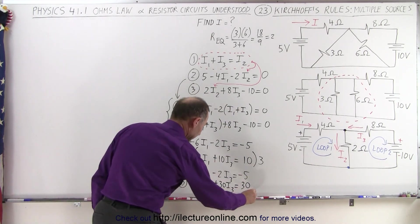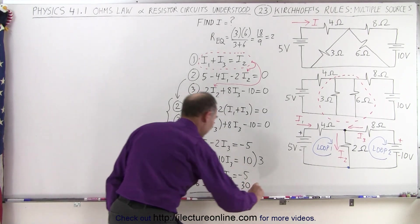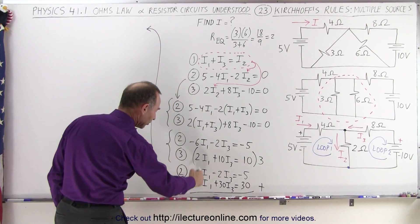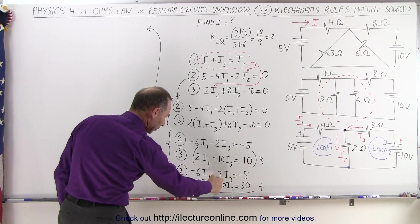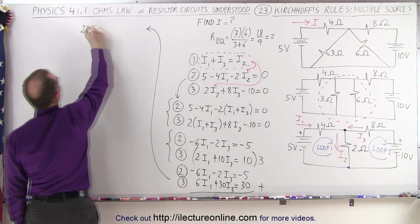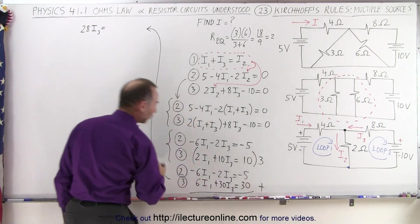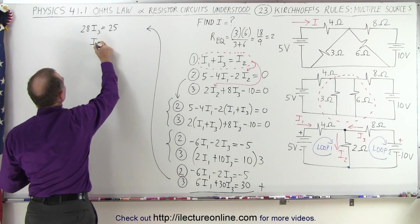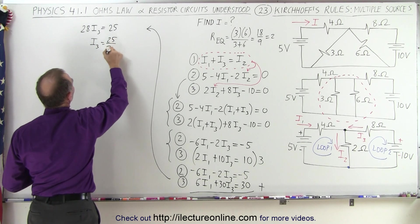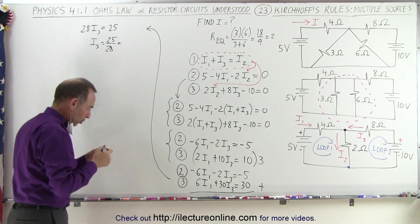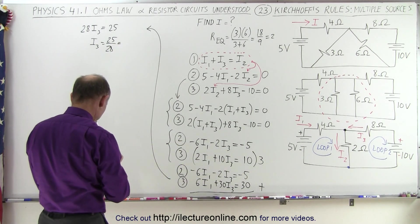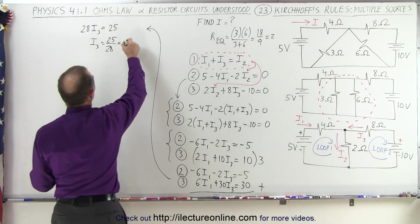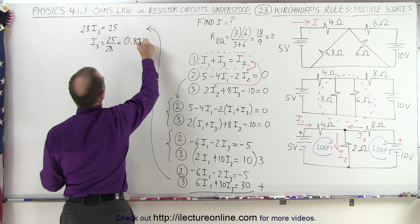Now I can go ahead and add the two together. Of course, I'm out of room here. I'm going to add the two equations together. When I do, I end up in an equation with just one variable, just I3. So the I1s cancel out. Minus two plus 30 is 28 I3 is equal to, when I add those together, I get a positive 25. So now we have I3 is equal to 25 divided by 28, which is equal to, let's see here, 25 divided by 28 is 0.893, 0.893 amps.